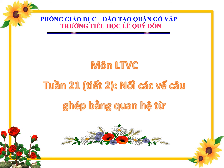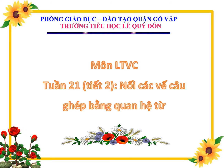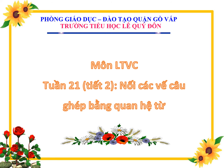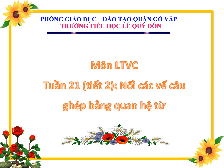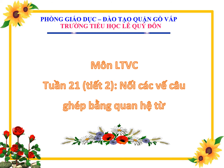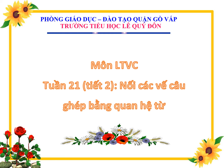Thế nào là một câu ghép thể hiện mối quan hệ nguyên nhân kết quả? Biết tạo ra câu ghép có quan hệ nguyên nhân kết quả bằng cách điền thêm một quan hệ từ hay một cặp quan hệ từ, thêm vế câu vào chỗ trống, thay đổi vị trí vế câu. Vậy các em đã sẵn sàng để tiếp nhận bài học mới chưa? Nếu các em đã sẵn sàng thì cô cho mình cùng bắt đầu nhé!